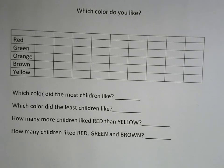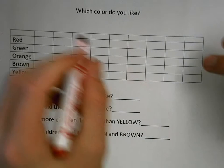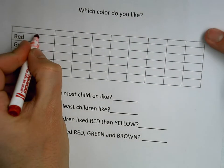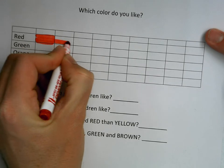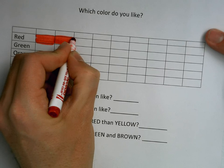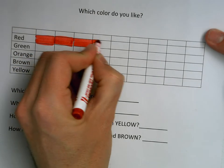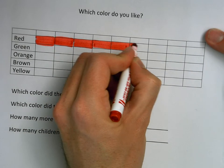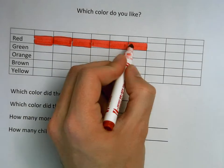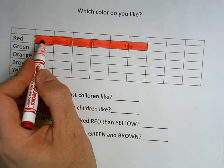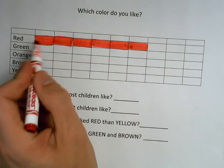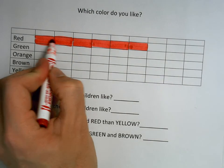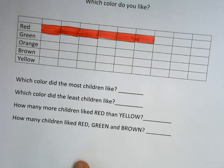If you like red, please raise your hand. Six kids picked red. So let me fill out my bar graph now. One, two, three, four, five, six. Because six kids liked it, I colored in six spaces on my bar graph. See how it looks like a bar of color going across? That's why it's called a bar graph.